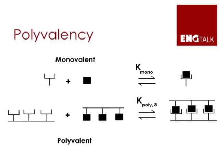The figure on the top shows you a monovalent interaction, which involves the binding of one molecule, called a ligand, to another partner, called a receptor, forming a complex. In contrast, in a polyvalent interaction, you have the simultaneous binding of multiple ligands to multiple entities. So in the figure shown below, you have a trivalent interaction, which involves the simultaneous binding of three ligands to three receptors.